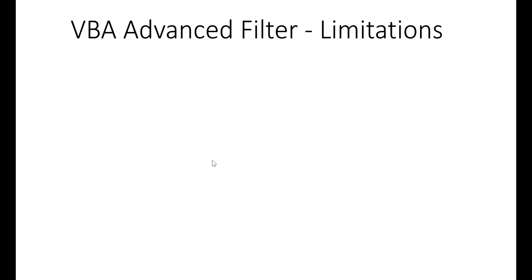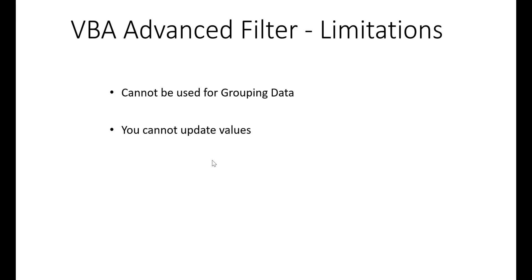Everything has its good and bad, so here are the limitations of the Advanced Filter. It's really good at filtering data and then copying it, but it cannot be used for grouping data — which is what we'd use a pivot table or a for loop for. Also, you cannot update values; you're filtering and copying data but you can't change the original result. You can, however, filter, copy, and then update it afterwards.